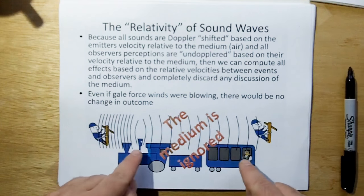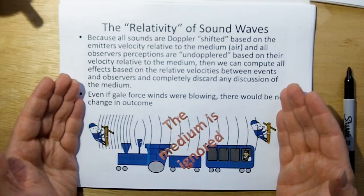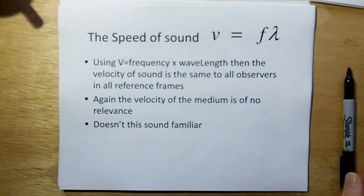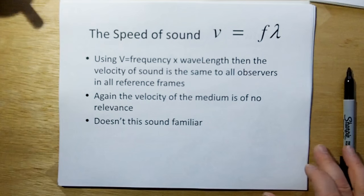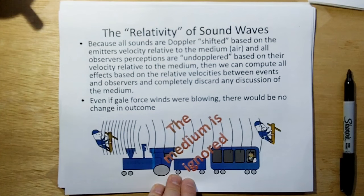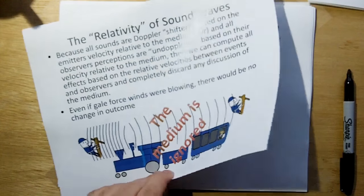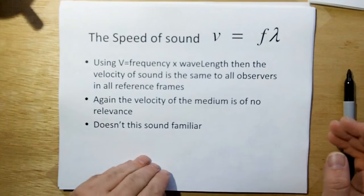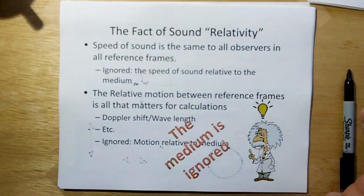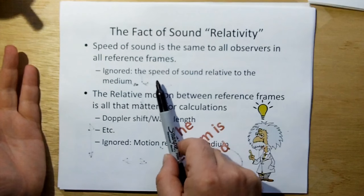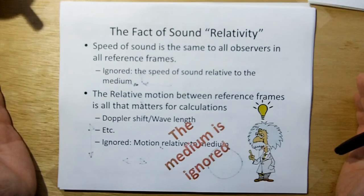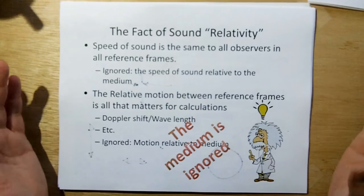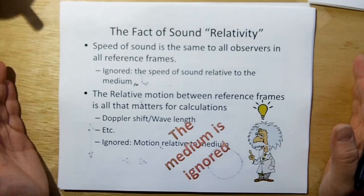Because the observer's perceptions are un-Doppler-shifted based on their velocity relative to the medium, we can compute all effects based on the relative velocities between events and observers and discard discussion of the medium. If we do all computations accounting for Doppler shift relative to the velocity of air, we can throw away the medium altogether and just consider the relative motions. Covariance is a special case of relativity because the velocity is the same. Regardless of the velocity of the medium, if you just take the velocity of the event to each observer, you can compute the right Doppler shifts — it doesn't matter what the velocity of the wind is.